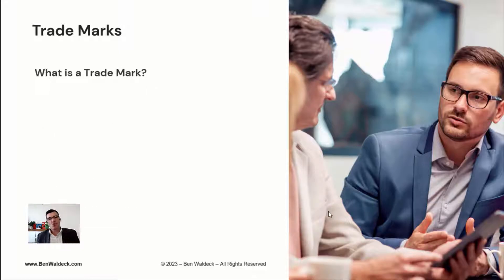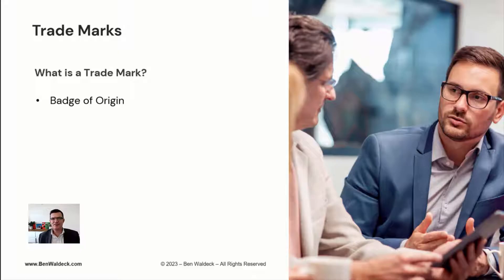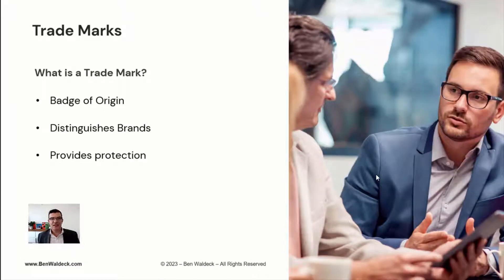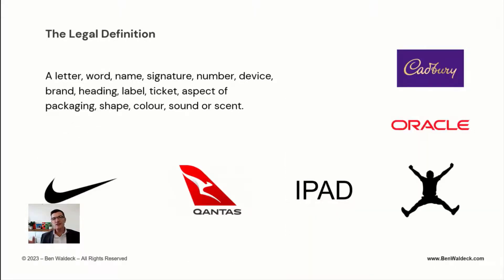Let's talk about what is a trademark. A trademark is a badge of origin — it separates businesses from one another in the marketplace, distinguishes brands, goods and services, and provides protection under the Trademarks Act 1995 in Australia. The legal definition under the Act is a 'sign,' which is defined as a letter, word, name, signature, number, device, brand, heading, label, ticket, aspect of packaging, shape, color, sound, or scent.